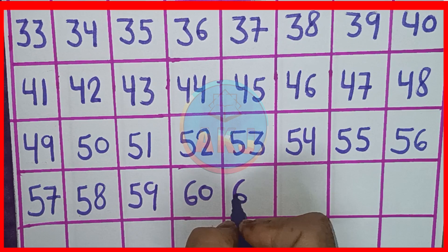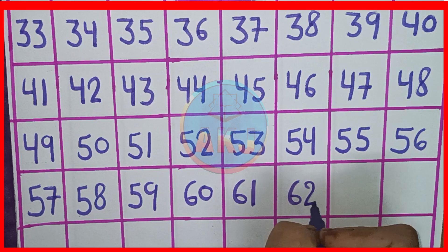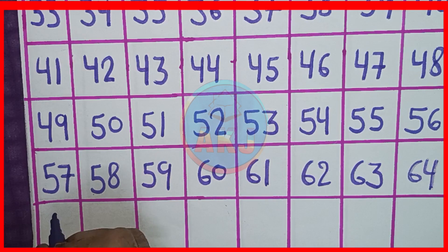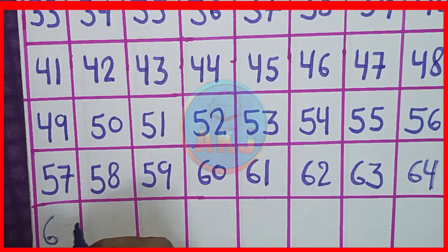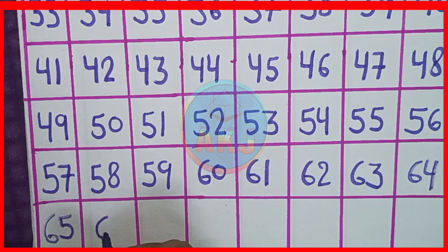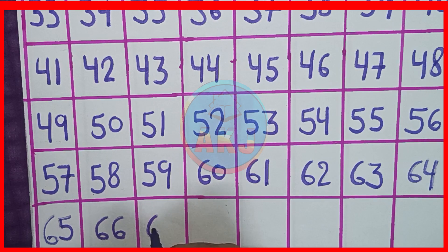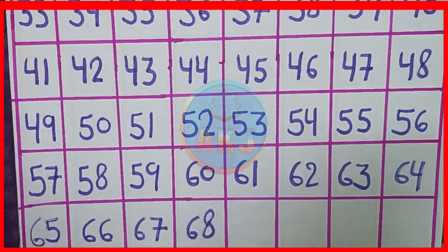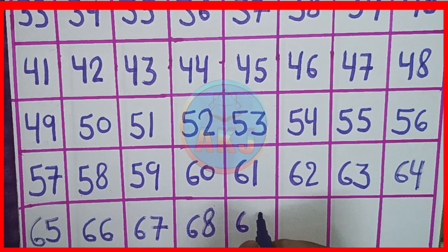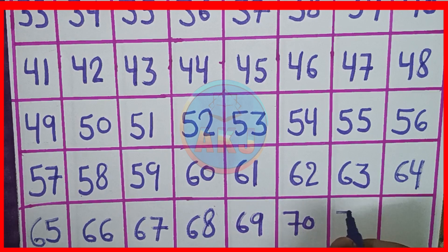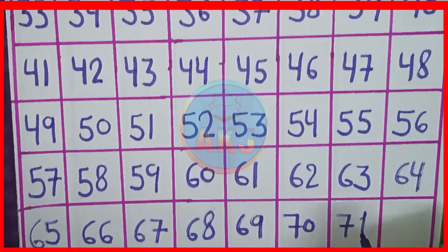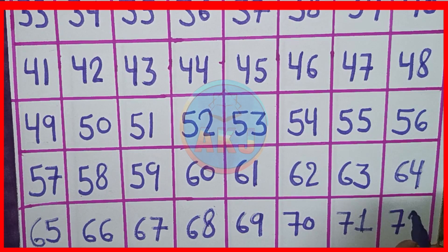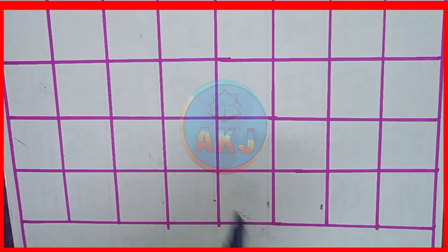60, 61, 62, 63, 64. In the next line, 65, 66, 67, 68, 69, 70, 71, 72.